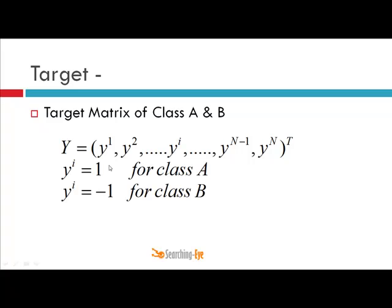And yi equals 1 for class A and yi equals minus 1 for class B. During regression, yi was representing the target values. Now here target vector is representing the class values, that is 1 for class A and minus 1 for class B.